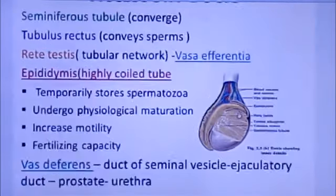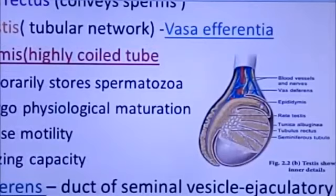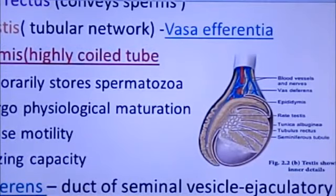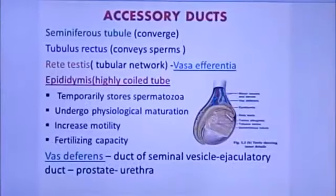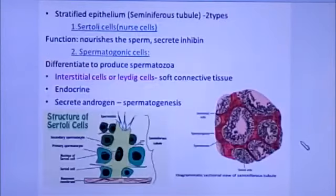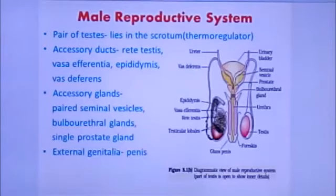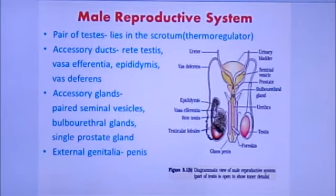The spermatozoa then moves to vas deferens. The vas deferens forms a duct with the seminal vesicle and together they form the ejaculatory duct. This ejaculatory duct passes through the prostate gland and opens into the urethra.